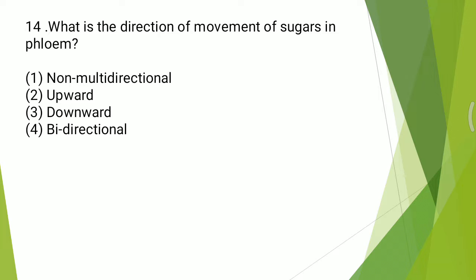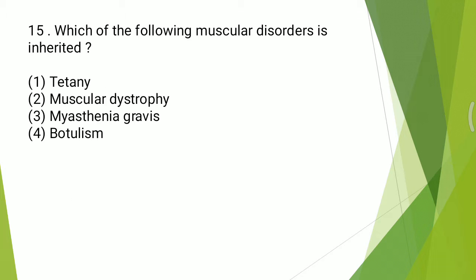Fourteenth question: what is the direction of movement of sugar in phloem? Options: non-multidirectional, upward, downward, or bidirectional? The correct answer is the fourth option — bidirectional.